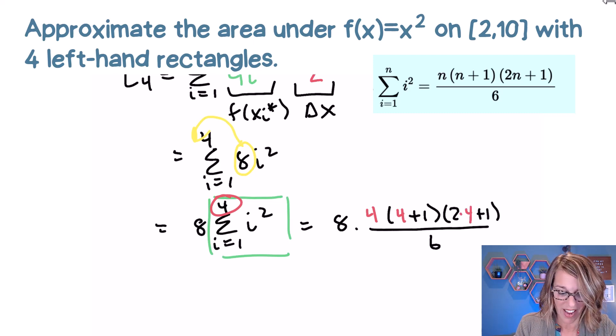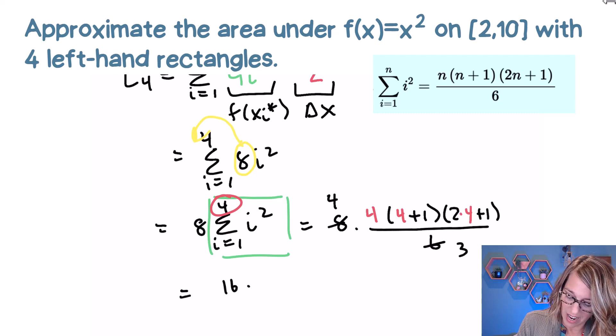Let's simplify what we can. So I can cancel the six and the eight with twos. I get a four here and a three here. Simplifying, I've got four times four, which is 16 times five. And then this two times four plus one is a nine, all divided by three.